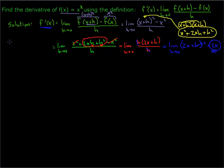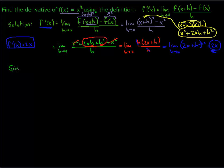So the derivative in this case is 2x, where the original function was f of x equals x squared. Now let's try a slightly different problem. Let's say we're given f of x equals the square root of x, and we want to find the derivative using the same limit definition that we did above.